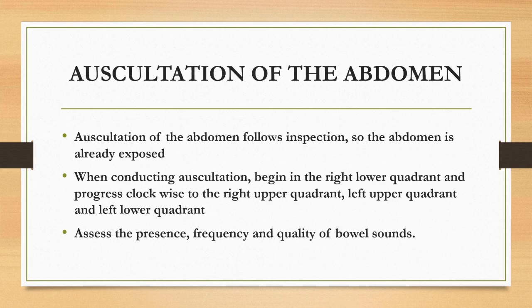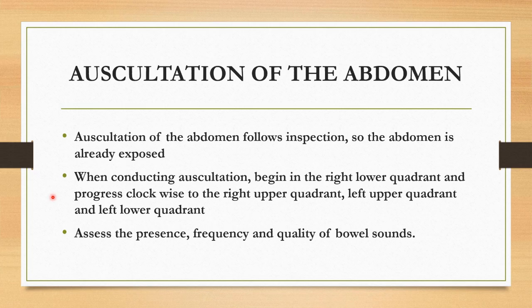How can you hear the bowel sounds? The only method is auscultation — by using the stethoscope you can hear the bowel sounds. Auscultation of the abdomen follows inspection, so the abdomen is already exposed. When conducting auscultation, begin in the right lower quadrant and progress clockwise to the right upper quadrant, then to the left upper quadrant and left lower quadrant, assessing the presence, frequency, and quality of bowel sounds.